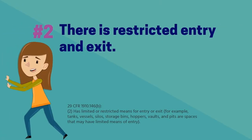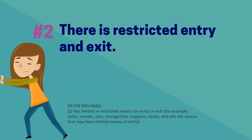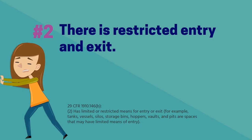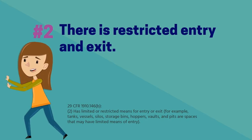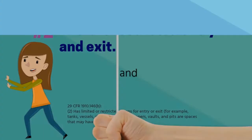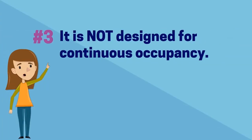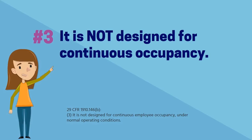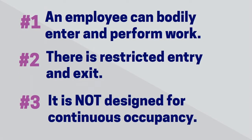The second thing to check for is if the area has restricted entry or exit. Here are some simple questions to consider: Are both hands needed to enter or exit? Must you crawl or contort your body to get in or out? Are there physical obstructions like pipes or holes in the floor? Are ladders required to access the space? If any of these are yes, then it may be a confined space. The last thing to check for is if the space is not designed for continuous occupancy — for example, when that area is operating normally, an employee cannot work in there for their entire shift because of safety hazards. So if an area has all three of these characteristics, it is a confined space according to OSHA.